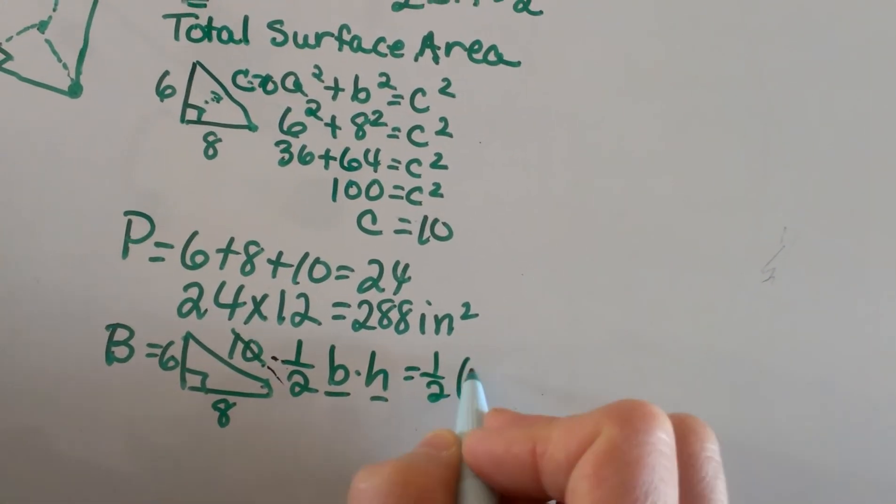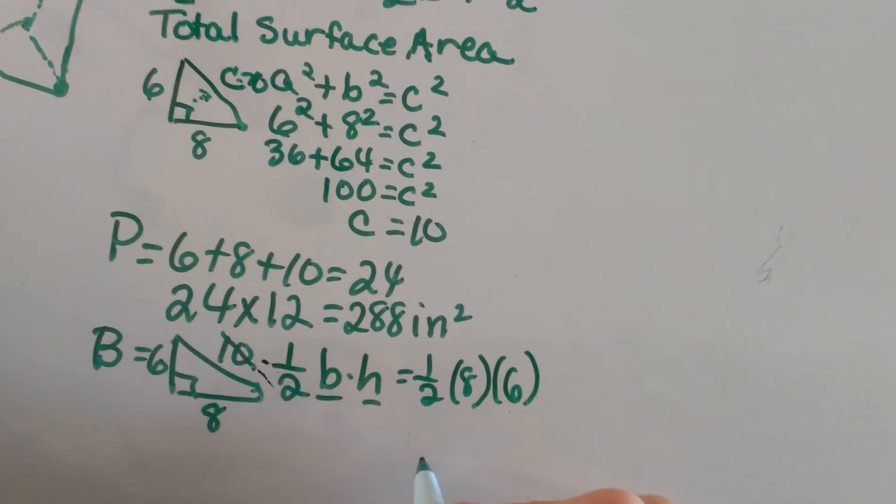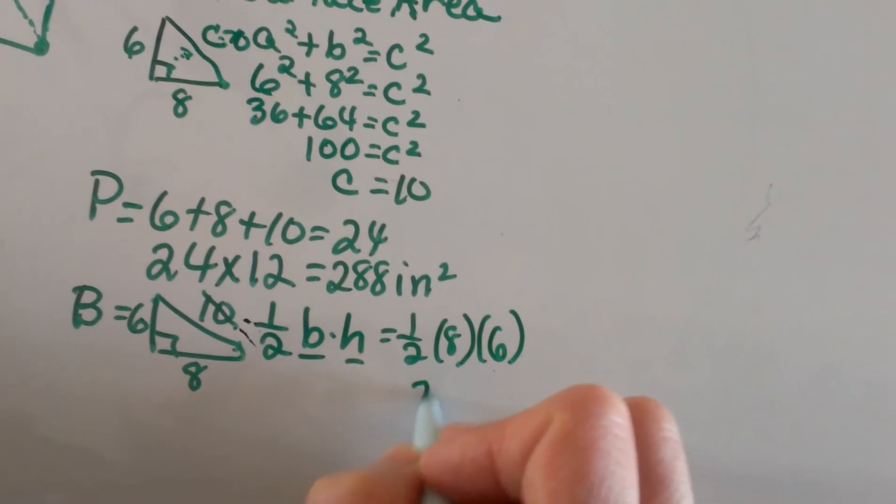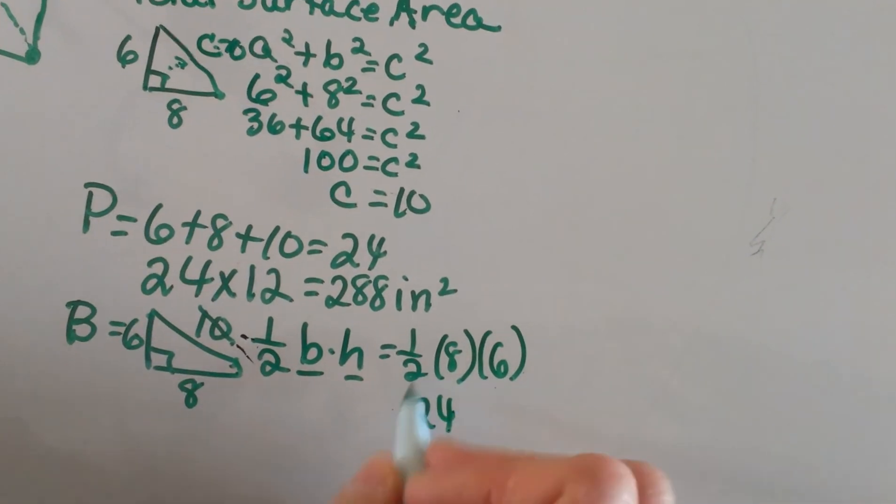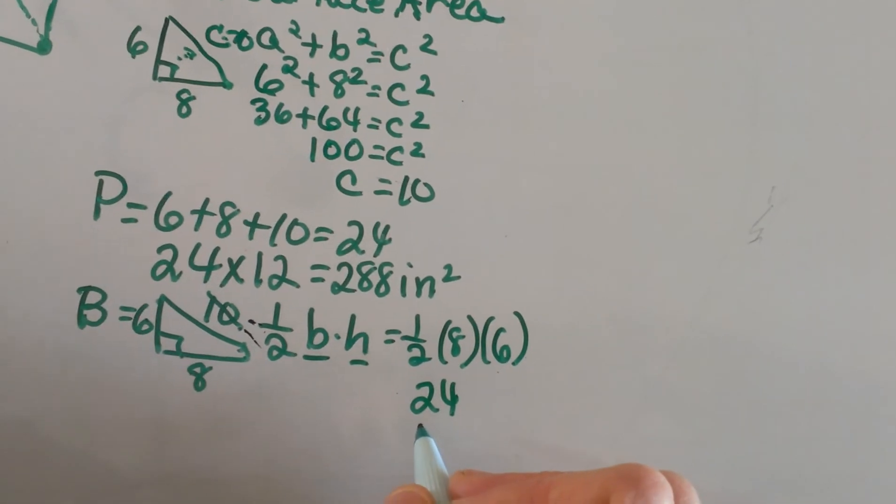So ½ the base is 8 and the height is 6. 8 × 6 is 48, half of 48 is 24. So 24 is the area of one base.